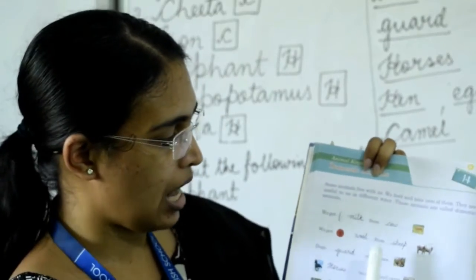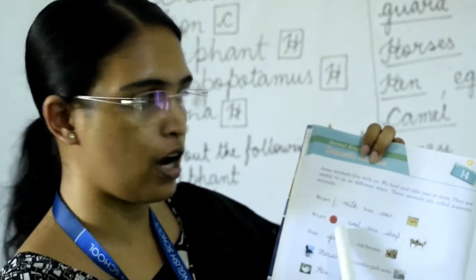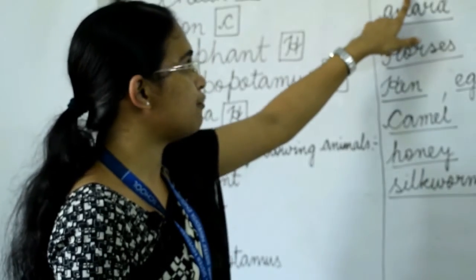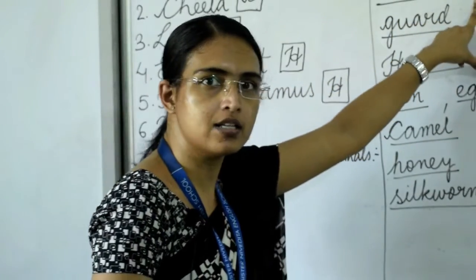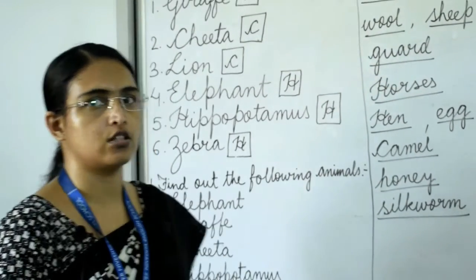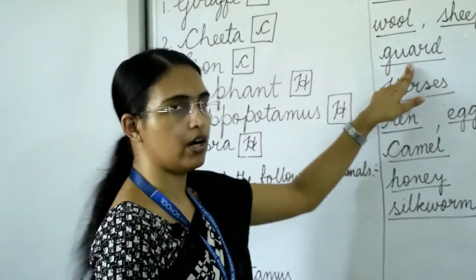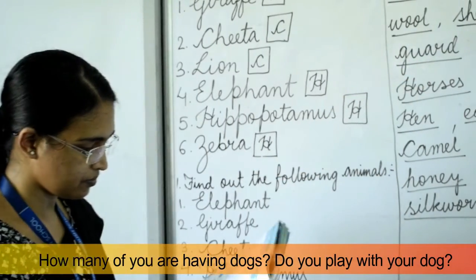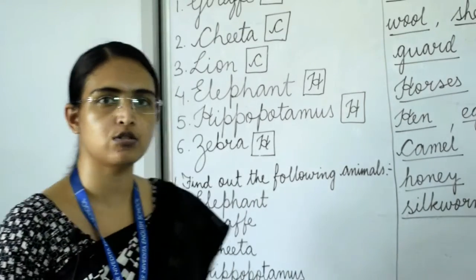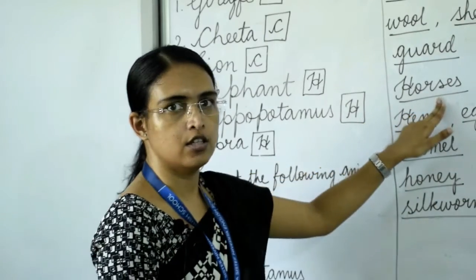Next question: we get wool from sheep. Write wool in the first dash and sheep in the second dash. Next: dogs guard our houses. Write guard in the dash. Next: horses are used to pull carts, so write horses in the dash.